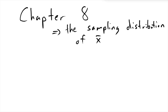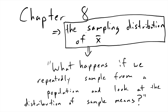This is Michael Sulock again, and this video is going to be covering a topic that we're going to use for the rest of the semester, which is called the sampling distribution of x-bar. So what is the sampling distribution of x-bar? It is what happens if we take a bunch of different samples from a population and look at how the mean of those samples varies.